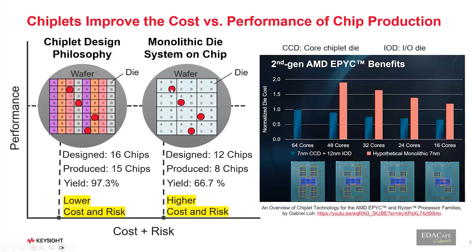There are obviously challenges in fabrication, packaging, and testing as well. When you test dies as they come together, you really don't want to throw away an expensive chiplet — say one for a CPU core — because it was packaged together with a much lower-cost chiplet for a smaller function that turned out to be bad. We need to find a way to address that.